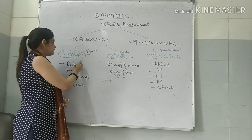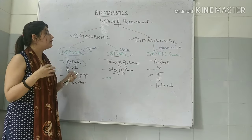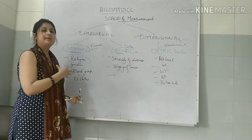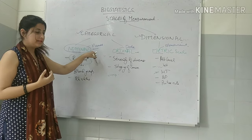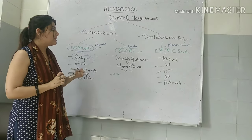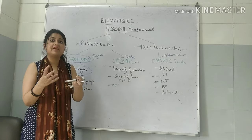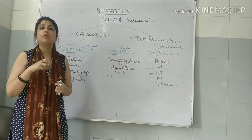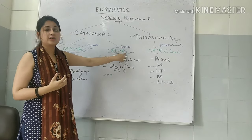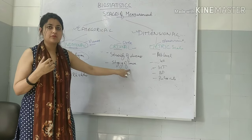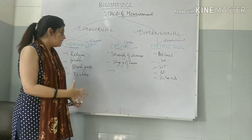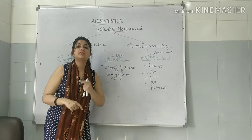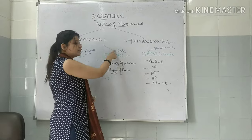For example, religion as a variable — Hindu, Muslim, Christian — is measured on nominal scale. Blood group is also based on names, so nominal scale. Gender or sex of a newborn is also nominal. For ordinal scale, consider severity of cancer or any disease — you can establish an order, so those are measured by ordinal scale. Presence of cervical cancer (yes or no) is nominal, but staging of cancer is ordinal because you can establish an order.